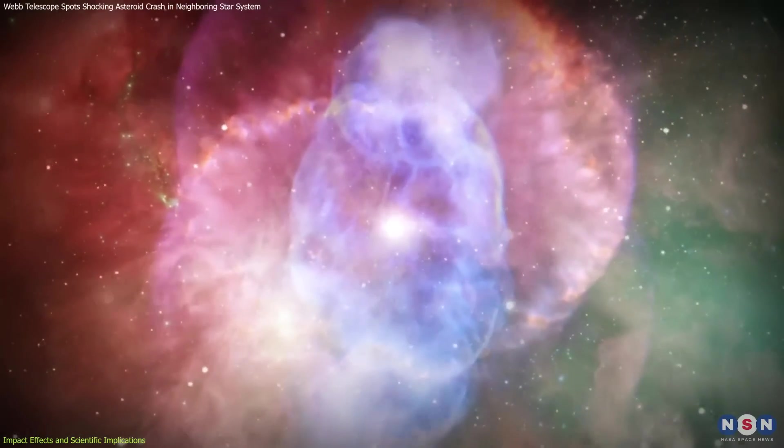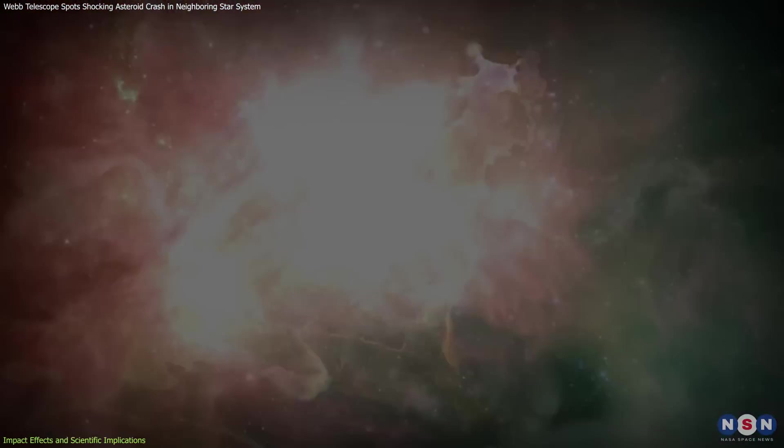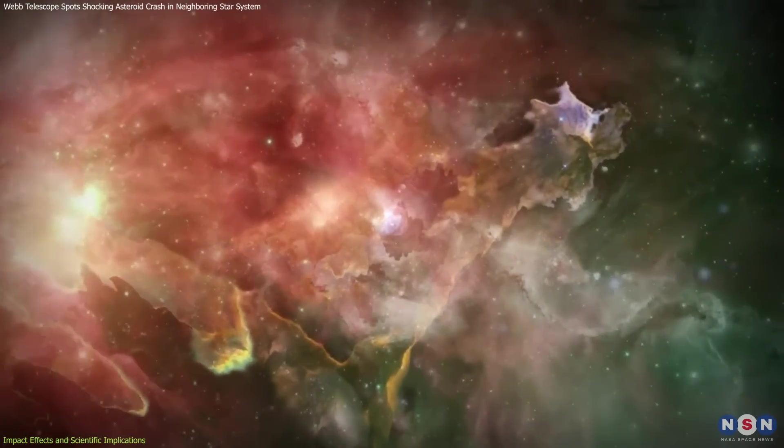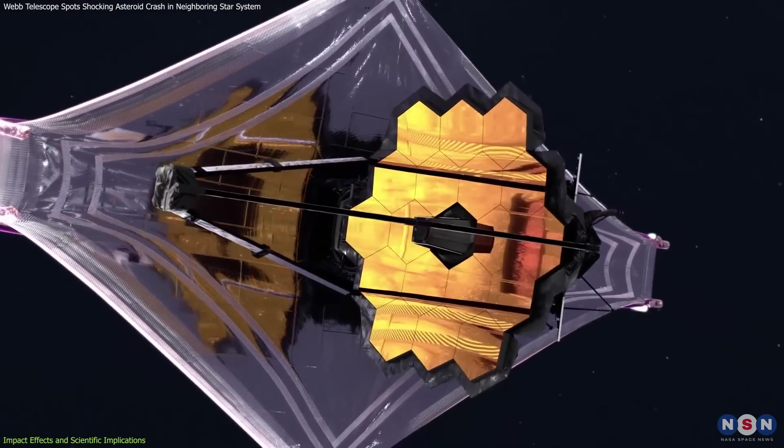Initially, this dust heated up and emitted thermal radiation detectable by Spitzer. Over time, as the dust cooled and moved away from the star, it no longer emitted the thermal features, making it invisible to Webb's instruments.